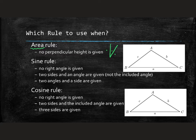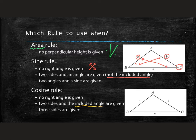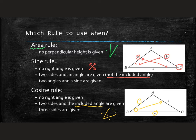For the sine rule: no right angle is given, two sides and an angle are given, but it is not an included angle. So a side and an angle could be given and we'd find something across the triangle — we look in a cross format. For the cosine rule: no right angle is given, two sides and an included angle are given, or sometimes all three sides are given. We have a side-angle-side structure and find the third side, or work backwards to find an unknown angle.